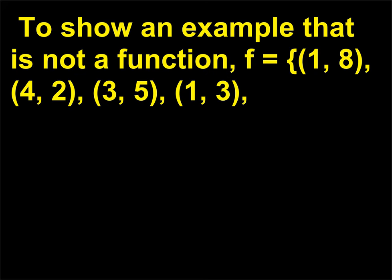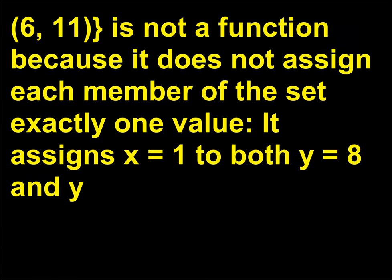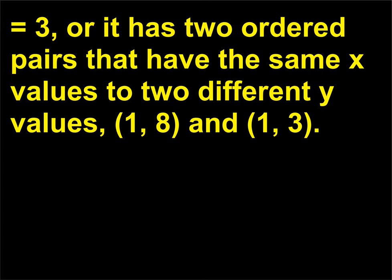To show an example that is not a function: F equals {(1,8), (4,2), (3,5), (1,3), (6,11)} is not a function because it does not assign each member of the set exactly one value — it assigns X=1 to both Y=8 and Y=3, meaning it has two ordered pairs with the same X value mapping to two different Y values: (1,8) and (1,3).